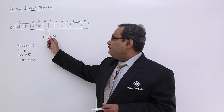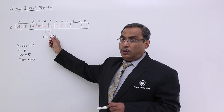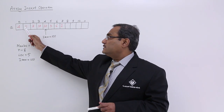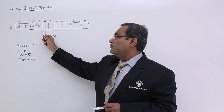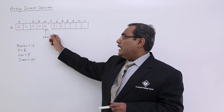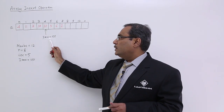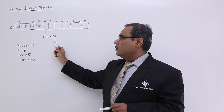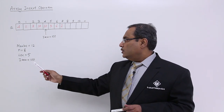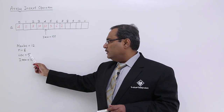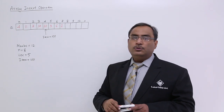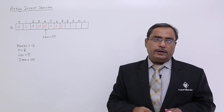Now, at the fifth location — not the index, fifth means first, second, third, fourth, fifth — at the fifth location I want to insert one item with the value 100. So loc is equal to 5 and item is equal to 100. Here max_loc is equal to 12 and n is equal to 8.